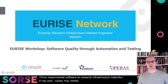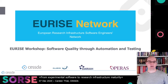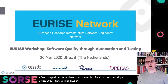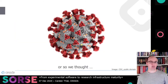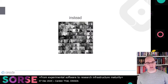We were planning a workshop on software quality through automation and testing. It was supposed to take place in Utrecht on the 26th of March. But as you can guess from that date, it did not quite turn out that well. Things happened — in fact, everything became digital.